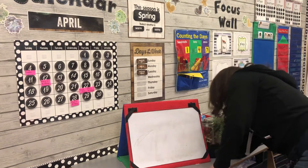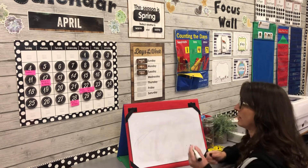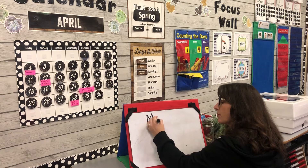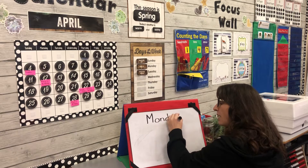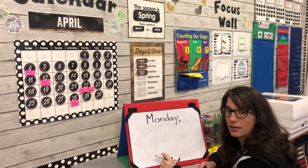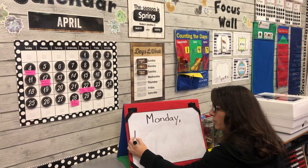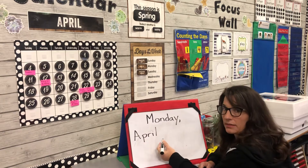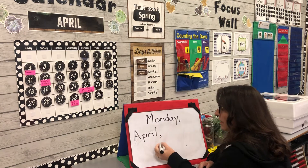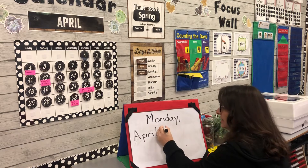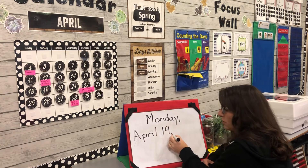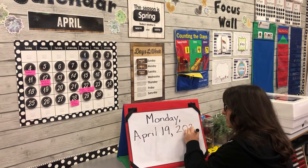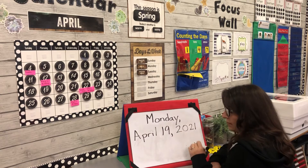I will write the full date. Monday is the day of the week, and it's April. The date today is the 19th — oops, the comma was in the wrong spot; it's supposed to go after the number. Then the year is 2021. The comma separates the two numbers, that's why it's there.